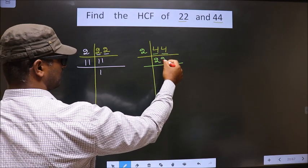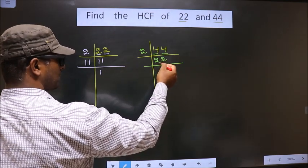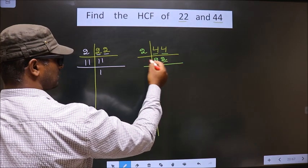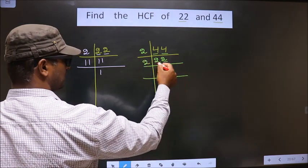Next number is 4. When do we get 4 in the 2 table? 2 times 2 is 4. For this number, last digit is 2, so we take 2 here.